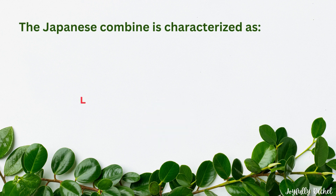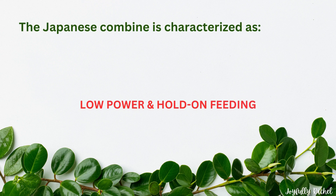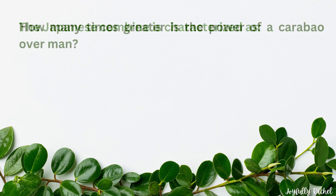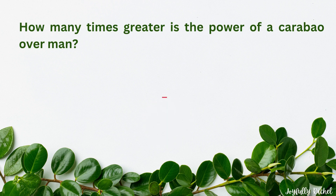Japanese combine is characterized as low power and hold-on feeding. How many times greater is the power of a carabao over man? The answer is 10.